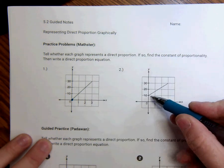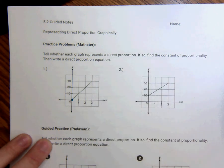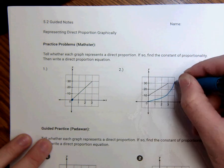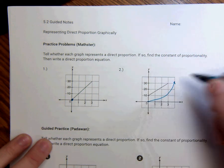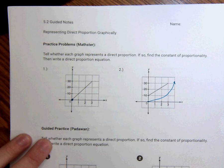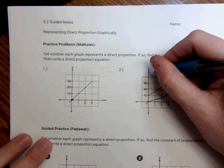This one would be no, because it does not go through 0,0. If it looked like this, the answer would be no. It went through 0,0, but it was not a straight line. And that's pretty much how you tell. So this one is not proportional.